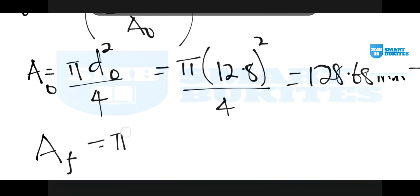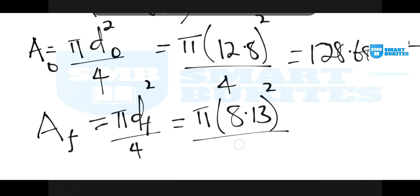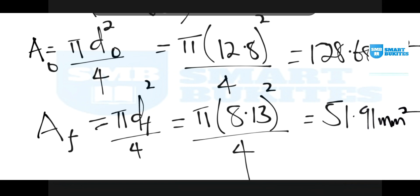For the final area — that is, the area at the point of fracture — it is π times the final diameter squared over 4, which is π × (8.13)² / 4. Calculating this correctly in the calculator gives 51.91 mm².